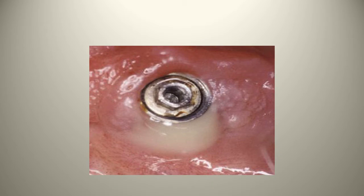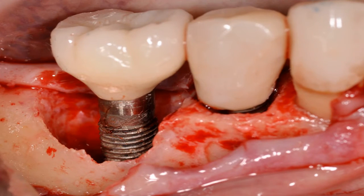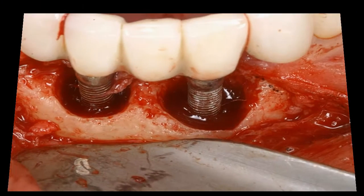Here is a photograph of an external hex implant showing obvious exudate. A radiograph demonstrates that classic scalloping appearance around the coronal third of the implant. A surgical photograph exposing this lesion reveals a circumferential crater of bone loss around the implant. Unlike periodontal disease which tends to show localized vertical bone defects, peri-implant diseases cause circumferential bone loss — a pattern not typically seen with periodontal disease.